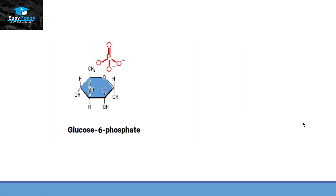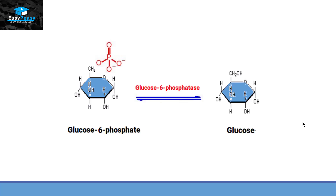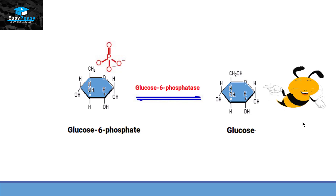So the last reaction is that glucose-6-phosphate is converted into free glucose with the help of glucose-6-phosphatase, and that is the end of the glycogenolysis process.